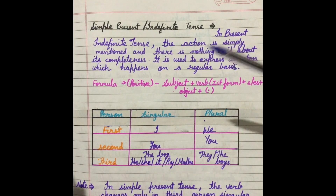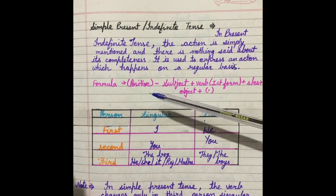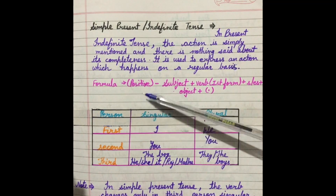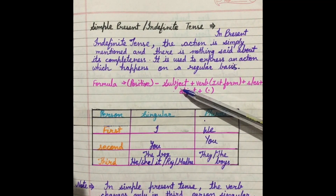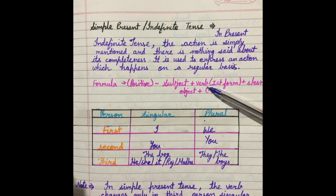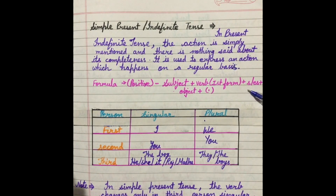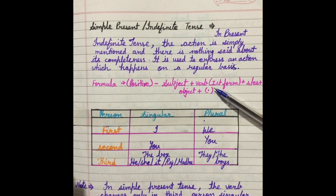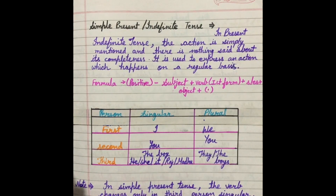Now, what is the formula of simple present tense? In a positive sentence, we use subject, then the first form of the verb. With the first form of the verb, we join s or es, then object and full stop. Now, where do we have to use s or es with the verb? Let's see.